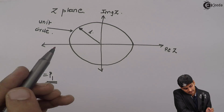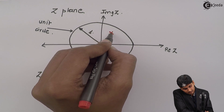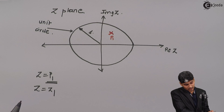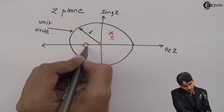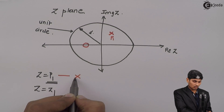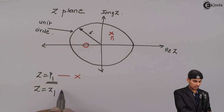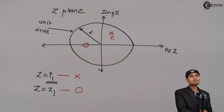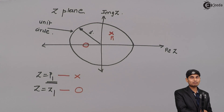Let us say z equal to p1 lies somewhere over here — this is p1. And z equal to z1 probably lies somewhere around here. Whenever I am representing a pole I will put a cross mark, and whenever I am representing a zero I will put a circle mark. So each transfer function will have two entities: the numerator entities are called zeros and the denominator entities are called poles, represented on the z-plane. Poles are represented by cross marks and zeros are represented by circles.